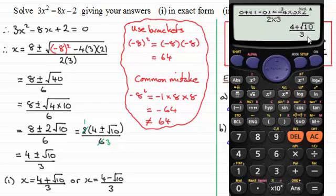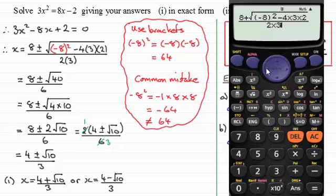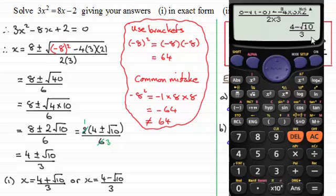Now for the other answer, the negative option, just take the cursor back up to the top just by pressing the left-hand side and press across. Now press up, and now move it across just behind the plus sign. And then if you press delete and now enter the minus, press equals. You see you get 4 minus root 10 over 3.